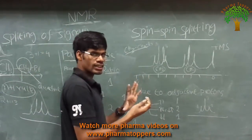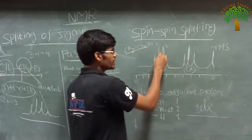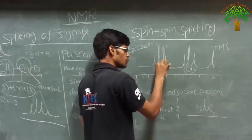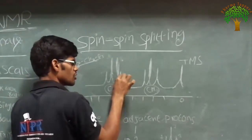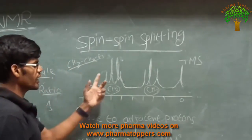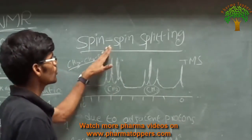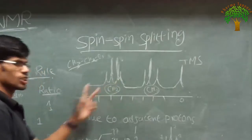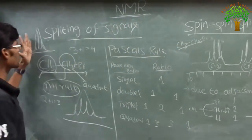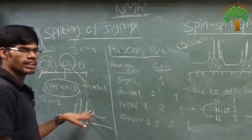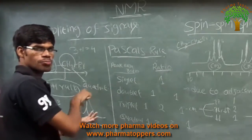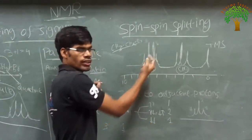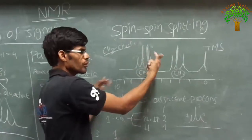Here we are going to calculate the ratio — that means how the intensity of the peaks varies. Here I am representing small peaks, here large peaks, here large peaks, here small peaks. Why does this occur? Here we are going to calculate how much intensity or what ratio this splitting will occur, and how many peaks will occur by splitting.